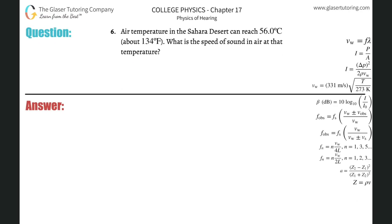Number six: Air temperature in the Sahara Desert can reach 56 degrees Celsius, which is about 134 Fahrenheit. What is the speed of sound in air at that temperature?